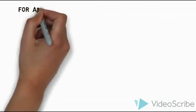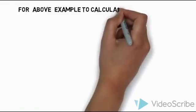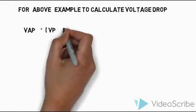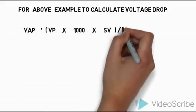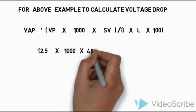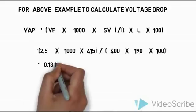Now for the above example to calculate the voltage drop, the voltage drop formula is already known: VAP = (VP × 1000 × SV) / (I × L × 100). So for the example: (2.5 × 1000 × 415) / (400 × 190 × 100).